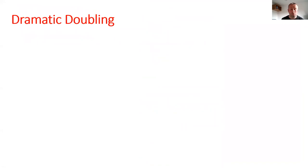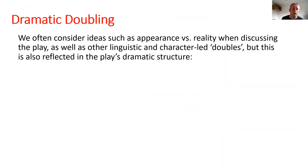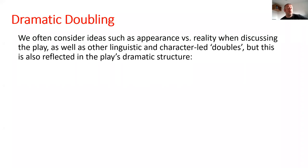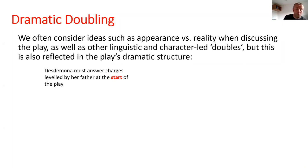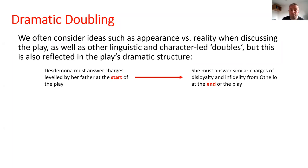Before going act by act, I want to talk about dramatic doubling. We often talk about doubling in the sense of appearance versus reality — there's a whole section in my scheme of work about sight, appearance, and reality, and Jonathan Peel's article on vision. But you also get linguistic and character-led doubles. Sometimes actors are doubled purely for expediency; sometimes it has more resonance. This play's dramatic structure does something very similar: Desdemona answers charges levelled by her father at the start, and by the end she faces similar charges — disloyalty and infidelity.